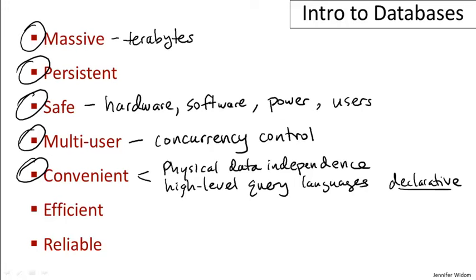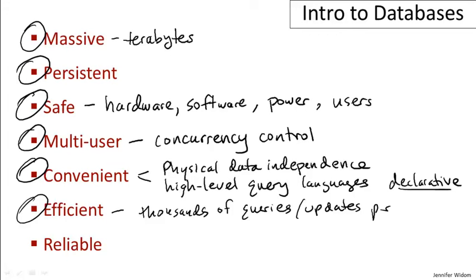And speaking of efficiency — that's number six, but certainly not sixth in importance. People say the three most important things in a database system are first performance, second performance, and again performance. So database systems have to handle thousands of queries or updates per second, and these are not simple queries — they may be very complex operations. Constructing a database system that can execute complex queries at that rate over terabytes of data is no simple task, and that is one of the major features provided by a database management system.